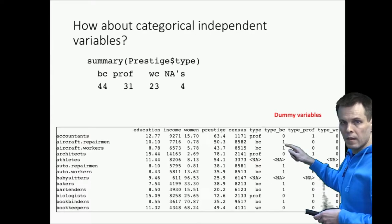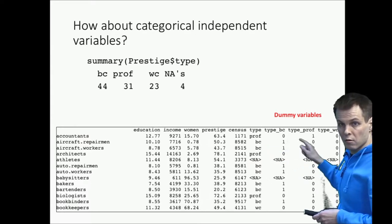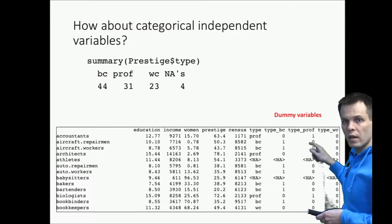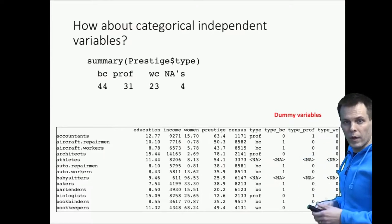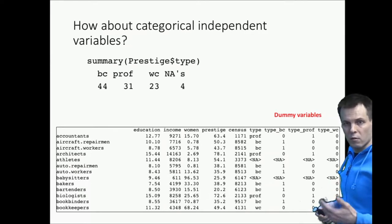Type blue collar is one for this blue collar occupation, others are zero. These are dummy or indicator variables and they indicate which category each occupation belongs to.